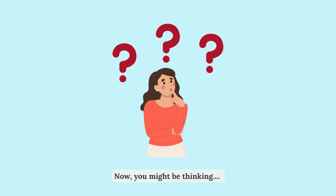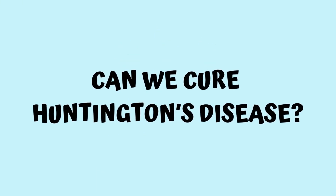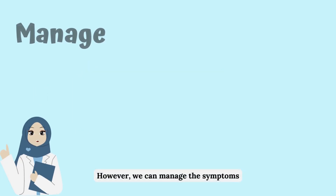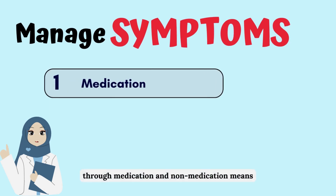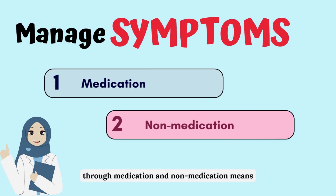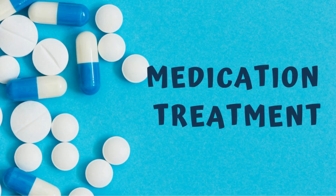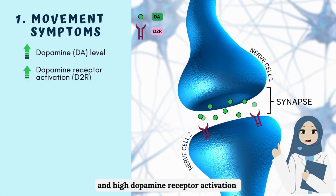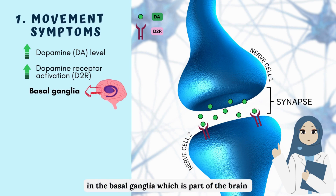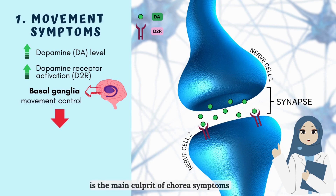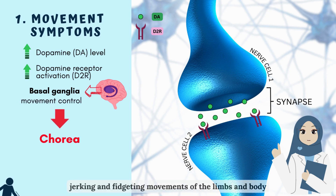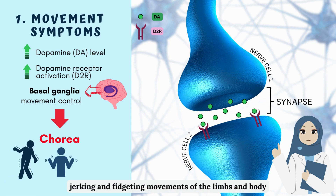Huntington's disease cannot be cured or slowed down. However, symptoms can be managed through medication and non-medication means. For movement symptoms, high dopamine levels and high dopamine receptor activation in the basal ganglia are the main culprit of chorea — the involuntary jerking and fidgeting movements of the limbs and body.